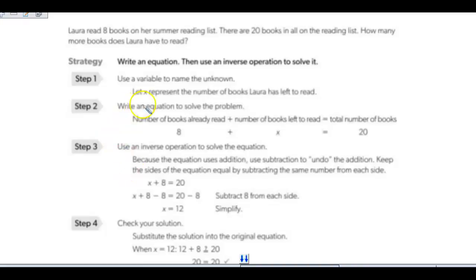So we need to come up with a variable that represents the number of books that Laura has left to read. And they're using x. You can use any variable. You could use b for books or you could use r for reading for the same purpose. But you do want to know that you're picking a variable that's going to stand for the unknown.